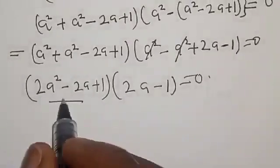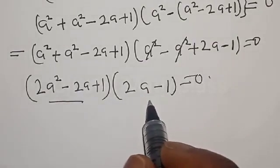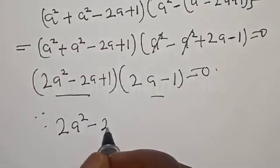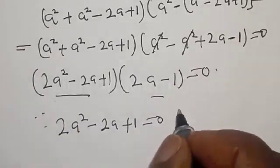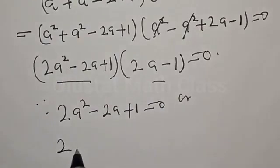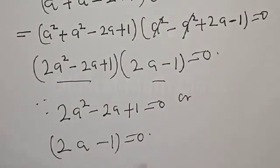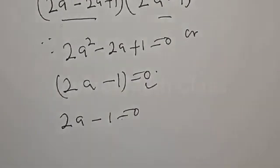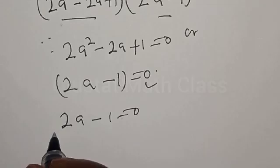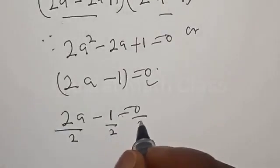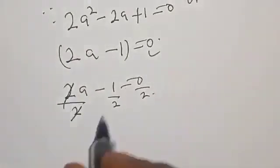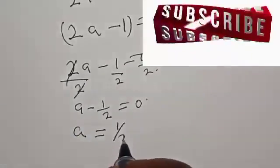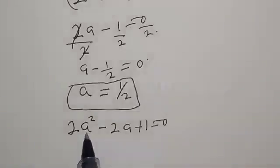Therefore we have two cases: 2a² minus 2a plus 1 equals zero, or 2a minus 1 equals zero. From the second case, 2a minus 1 equals zero. Dividing both sides by 2, we get a minus 1 over 2 equals zero, therefore a equals 1 over 2. That is one of the roots.